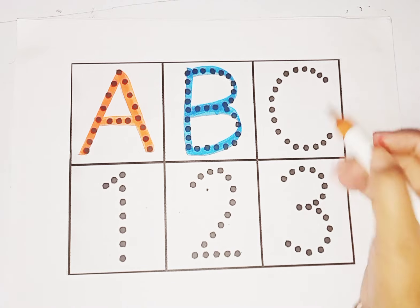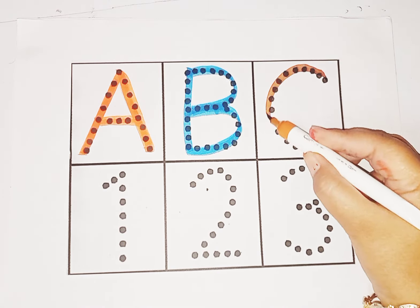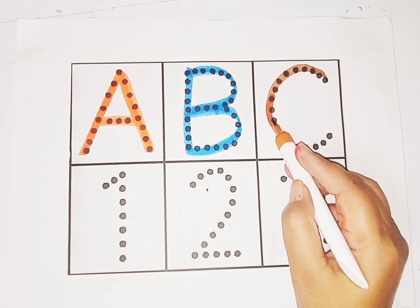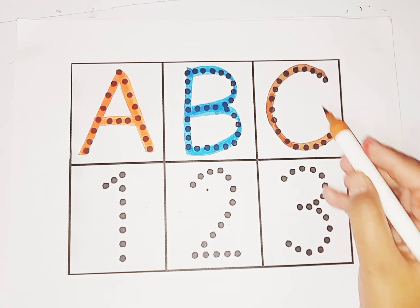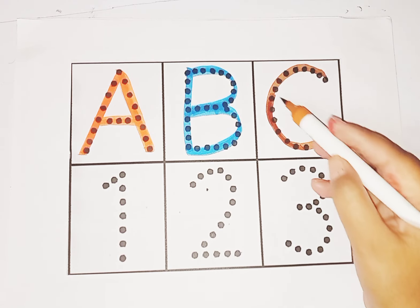Next is brown color. Letter C. C for Cat. Sound is K. K, K. Cat.